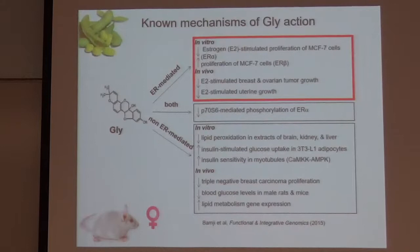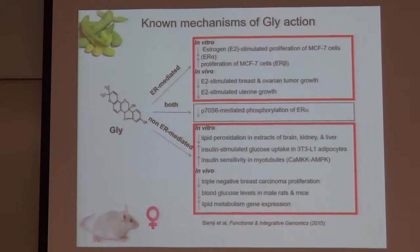Some of these effects were in vitro — in tumor cells, glyceolin treatment suppressed estrogen-stimulated proliferation of breast cancer cells. It also suppressed breast and ovarian tumor growth in vivo in an animal tumor model, and it suppressed estrogen-stimulated uterine growth, all through activity at estrogen receptor alpha, or ESR1. One study also found that glyceolin could increase the proliferation of breast tumor cells if it acts through estrogen receptor beta.